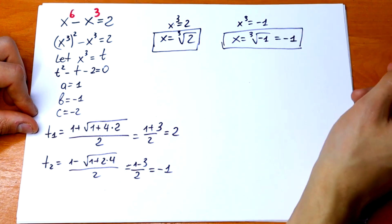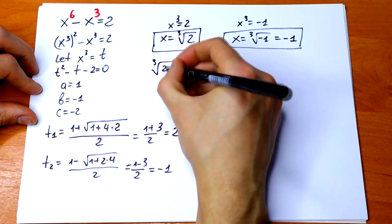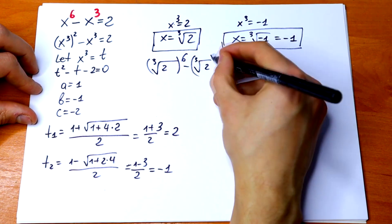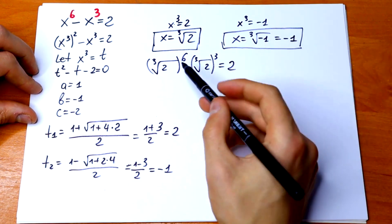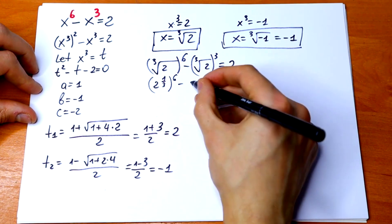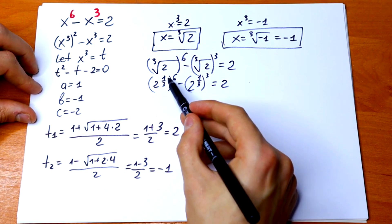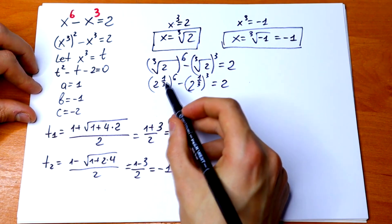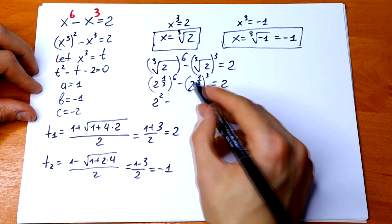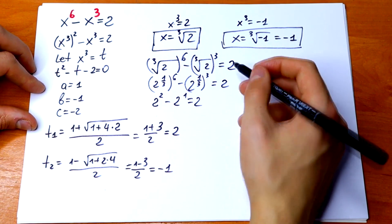So let's check these roots. Let's check cube root of 2 first. We will have cube root of 2 to the sixth power minus cube root of 2 to the cube equal to 2. We can write this as 2 to the power 1 over 3, to the sixth power, minus 2 to the power 1 over 3, to the third power, equal to 2. Multiplying the exponents: 1 over 3 times 6 equals 2, so we have 2 squared, and 1 over 3 times 3 equals 1. So 4 minus 2 equal to 2. This root is good for us.